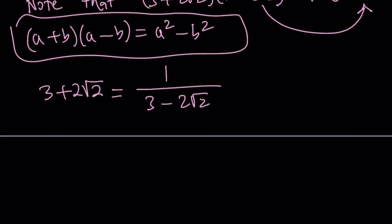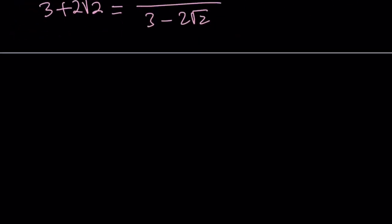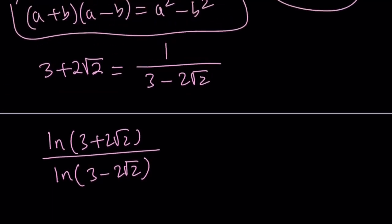Now how is this helpful? First of all, let's rewrite our expression. We have ln 3 plus 2 root 2 divided by ln 3 minus 2 root 2. Now, since 3 plus 2 root 2 can be written as 1 over something, that brings us to the negative exponents.